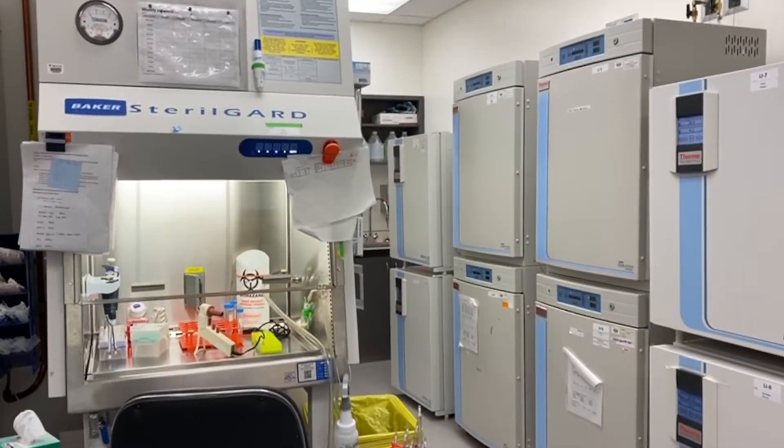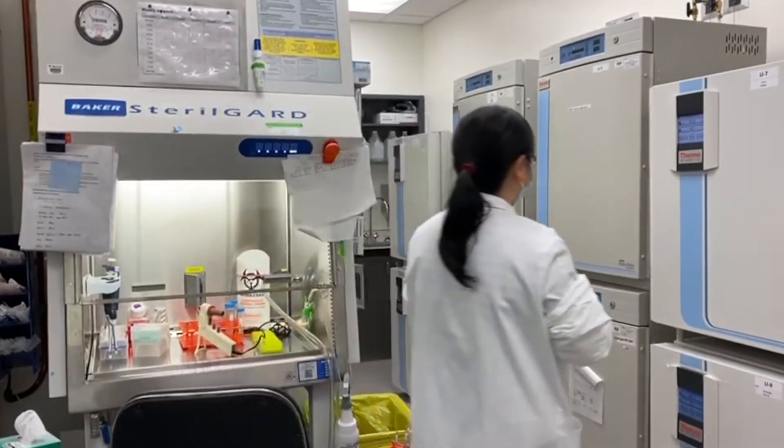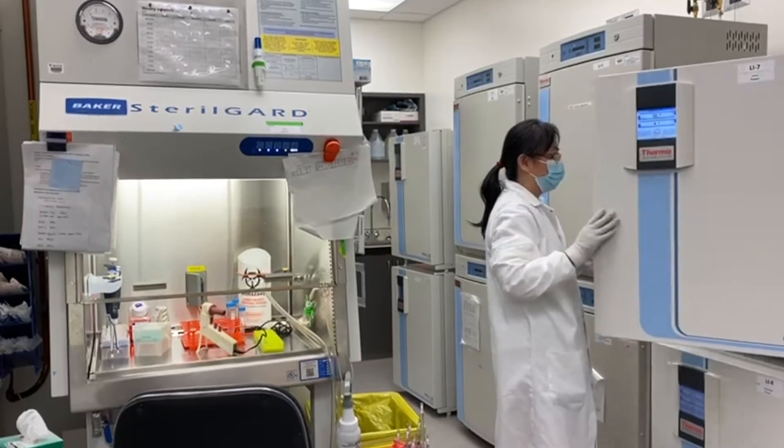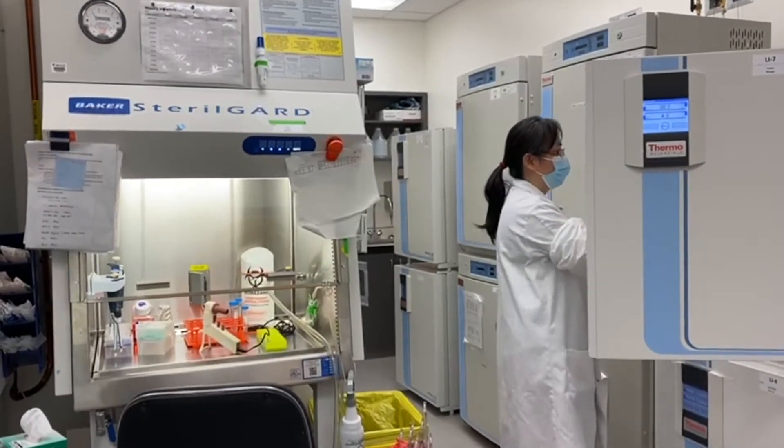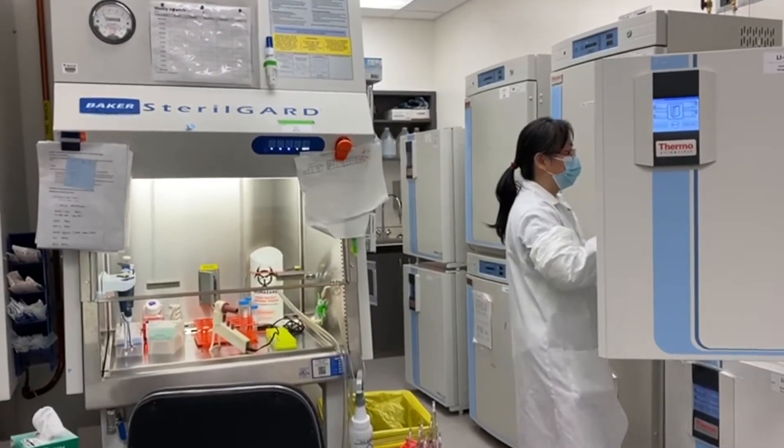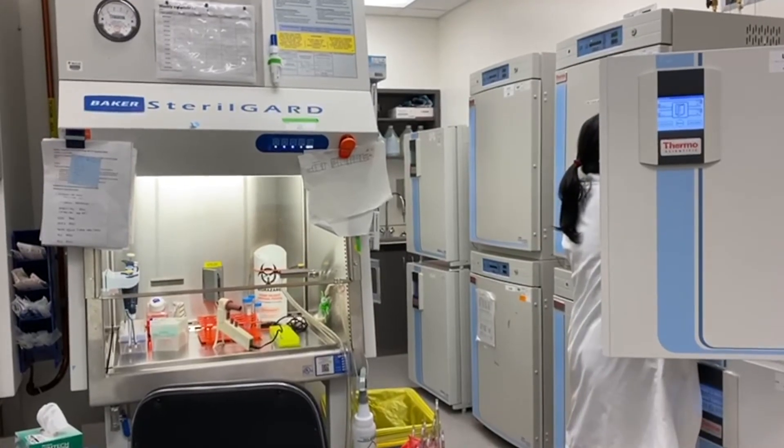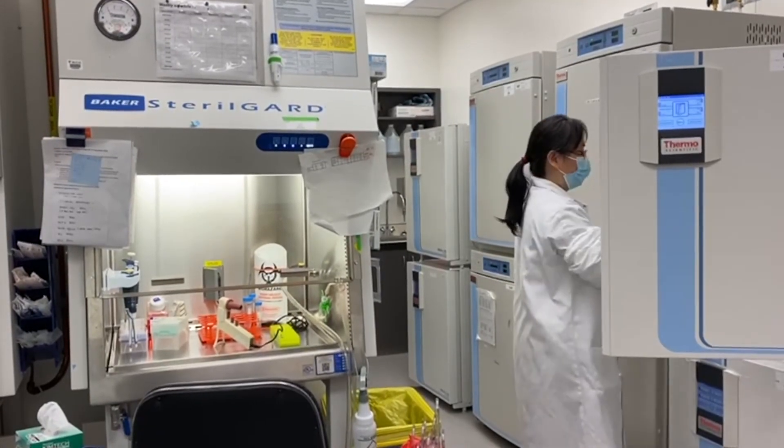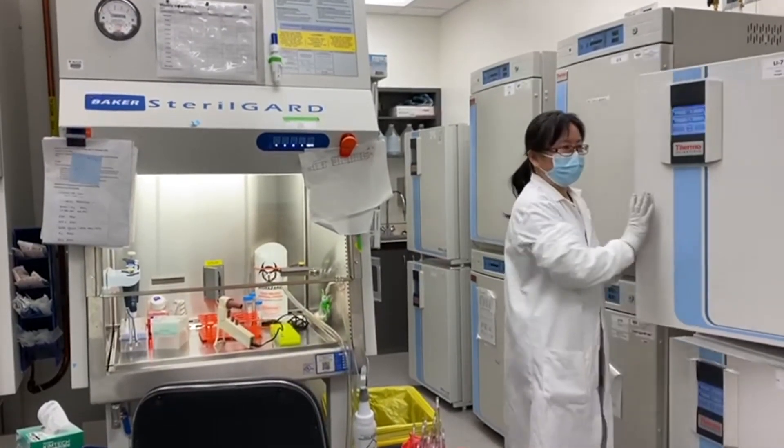Store the dish at 37 degrees Celsius inside the cell culture incubator for at least one hour before using it to plate cells. Ideally, matrigel coated dishes should be used on the day of the coating.